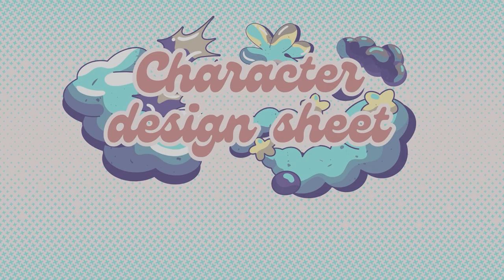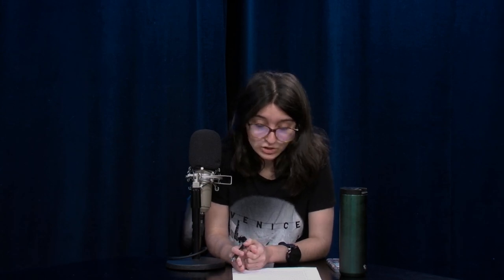Hello everyone, welcome back with Character Design with Brianna. This will be your fifth and final lesson for the series. If you missed the other sessions, check out the links below. For a recap of what we have learned throughout the sessions, we'll be gathering everything together to make a character sheet. A character sheet is mostly a sheet of what you want to know about the character, so another artist can draw them and even animate them. The main things I'll be looking for in the character sheet are a color palette, exaggerating poses, four to five expressions, character accessories, and shape language.